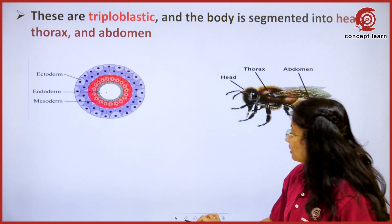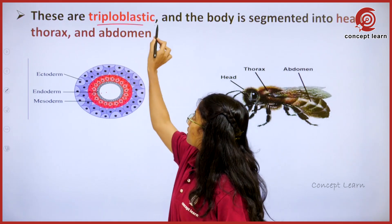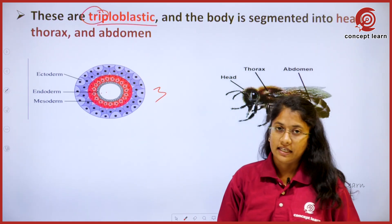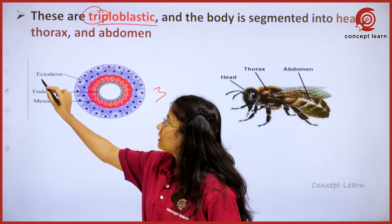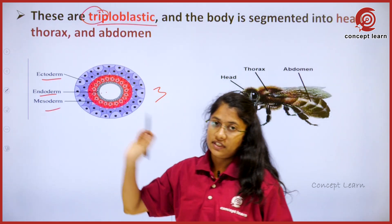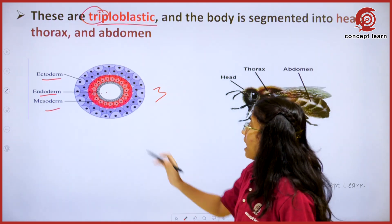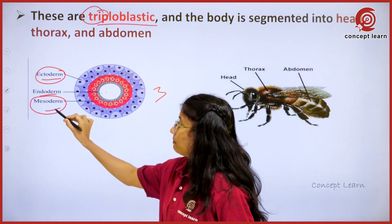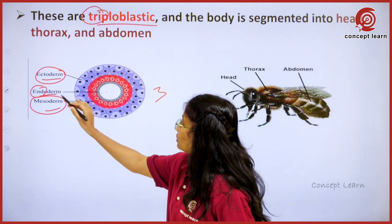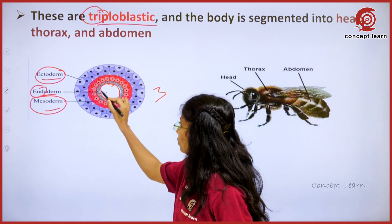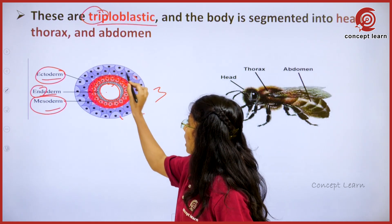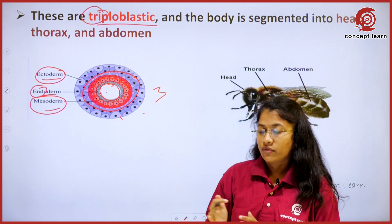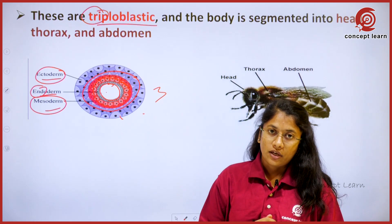The next character is that arthropods are triploblastic. Here 'tri' means three, representing three germinal layers present within the embryonic layer of the egg. The outer layer is the ectoderm, the middle is the mesoderm, and the inner layer is the endoderm. In terms of evolution, these three germinal layers form the body organs when the organism reaches the adult stage.